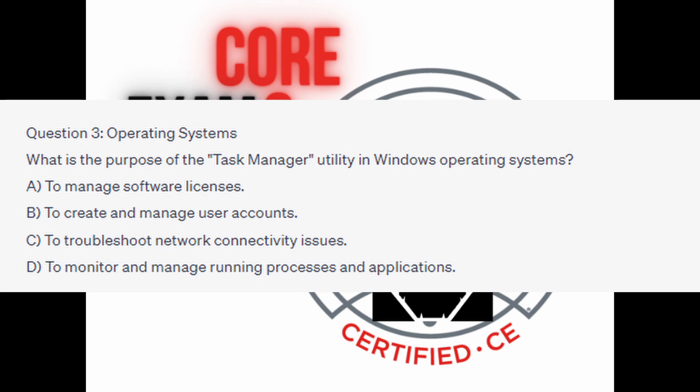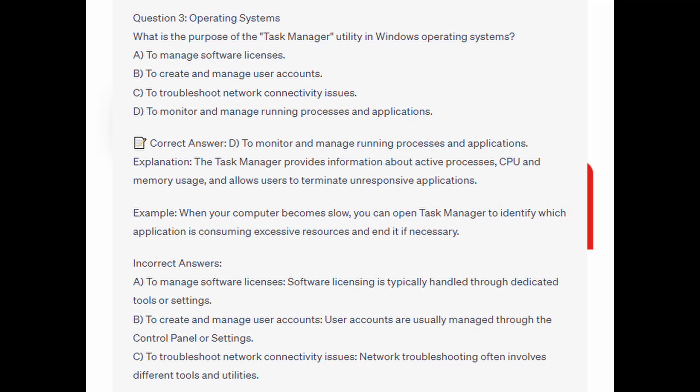You now have 5 seconds. And the quick answer is D: to monitor and manage running processes and applications. Task Manager provides information about active processes, CPU and memory usage, and allows users to terminate unresponsive applications. When your computer becomes slow, you can open Task Manager to identify which application is consuming excessive resources and end it, if necessary.